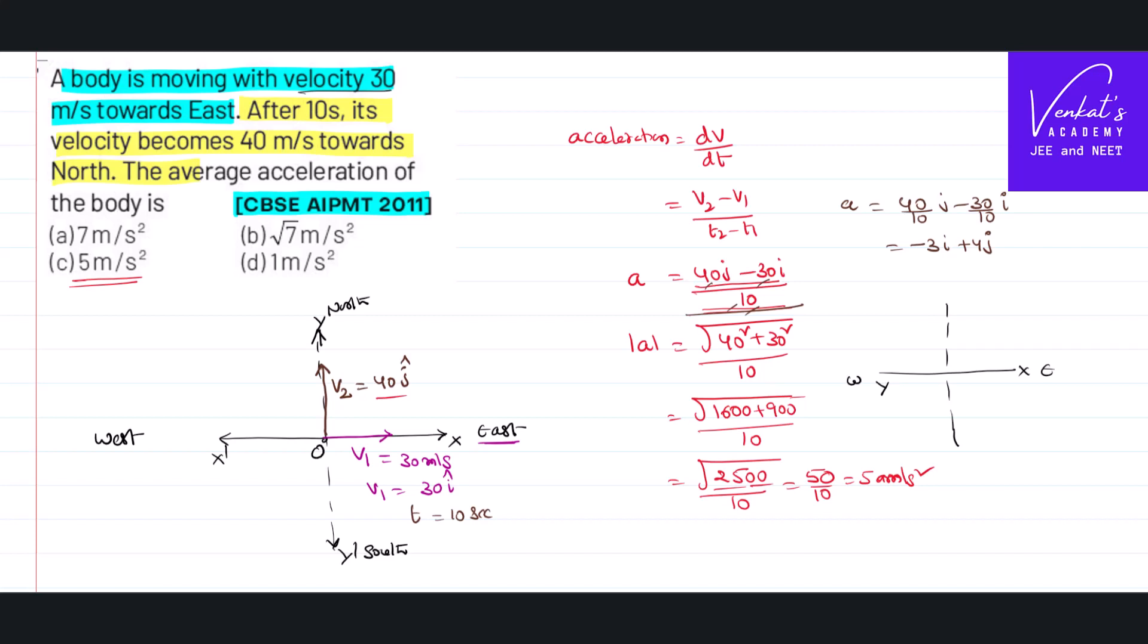Where is this minus 3i? Where can I represent this minus 3i? Here is the minus 3i, and plus 4j, this is plus 4j. So what is the direction of this vector? I can say this is acceleration with an angle theta.